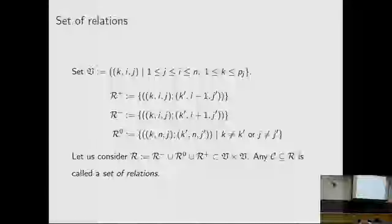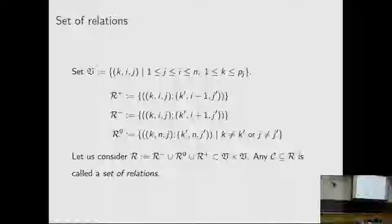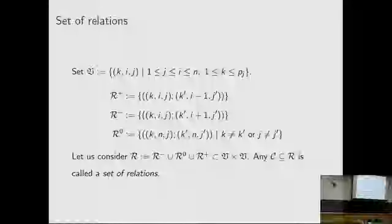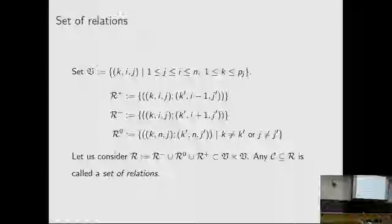In order to find suitable tableaux, we introduce a set of relations. Let V_2 be the vertex set K_{ij}. R_plus is the set of pairs K_{ij} and K'_{i-1,j'}. We can define R_minus and R_zero similarly, where R_zero consists of relations in the top row. We consider the set R to be the union of these three sets, and any subset of R is called a set of relations.